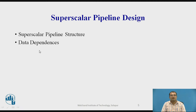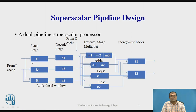Now we will focus on the superscalar pipeline structure and data dependence. First we will see the superscalar pipeline structure — how it looks and how it works. This is a dual pipeline superscalar processor. We find four different stages: fetch, decode, execute, and write back.